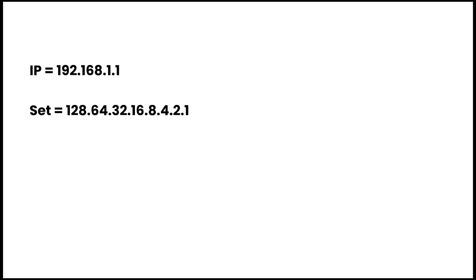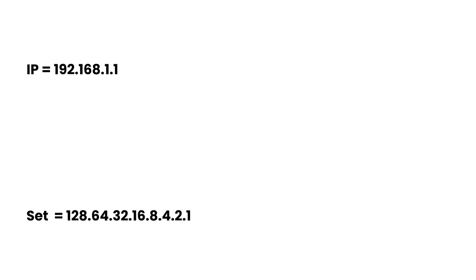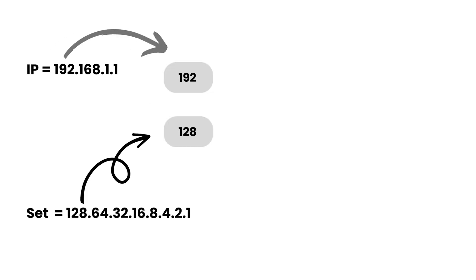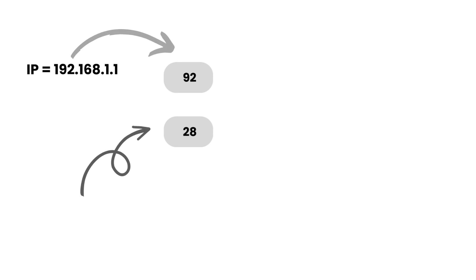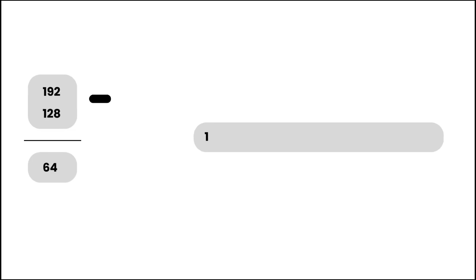After writing the IP address, also write the set as per the video. Now take the first octet of the IP address, that is 192, and take 128 from the set. Subtract 128 from 192 — we get 64. Since 128 can be subtracted from 192, we write 1 as the first binary digit.